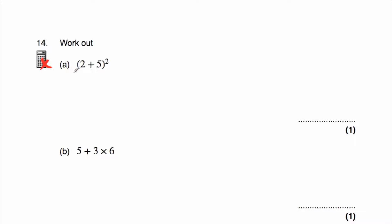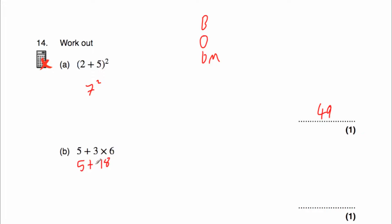Question 14a: work out (2 plus 5) squared. Brackets first: 2 plus 5 is 7. Then orders: 7 squared is 7 times 7, which is 49. Question 14b: 5 plus 3 multiplied by 6. No brackets, no orders; we have a multiplication: 3 times 6 is 18. Then 5 plus 18 is 23.